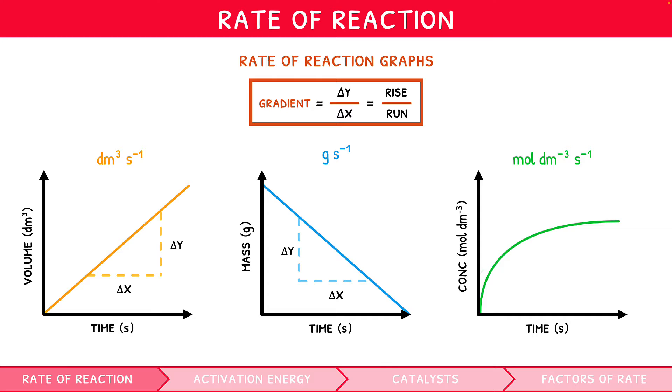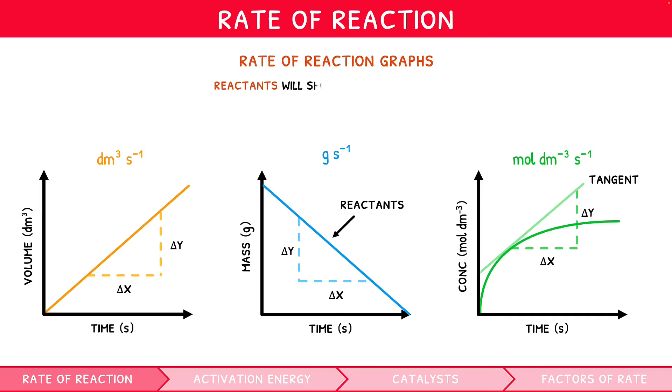However, for a curved line, draw a tangent at the point and calculate the gradient of this tangent using the same formula. It is worth highlighting that graphs observing reactants will show a negative gradient, and those measuring products will show a positive gradient, since they are recording a species that is disappearing and appearing respectively.